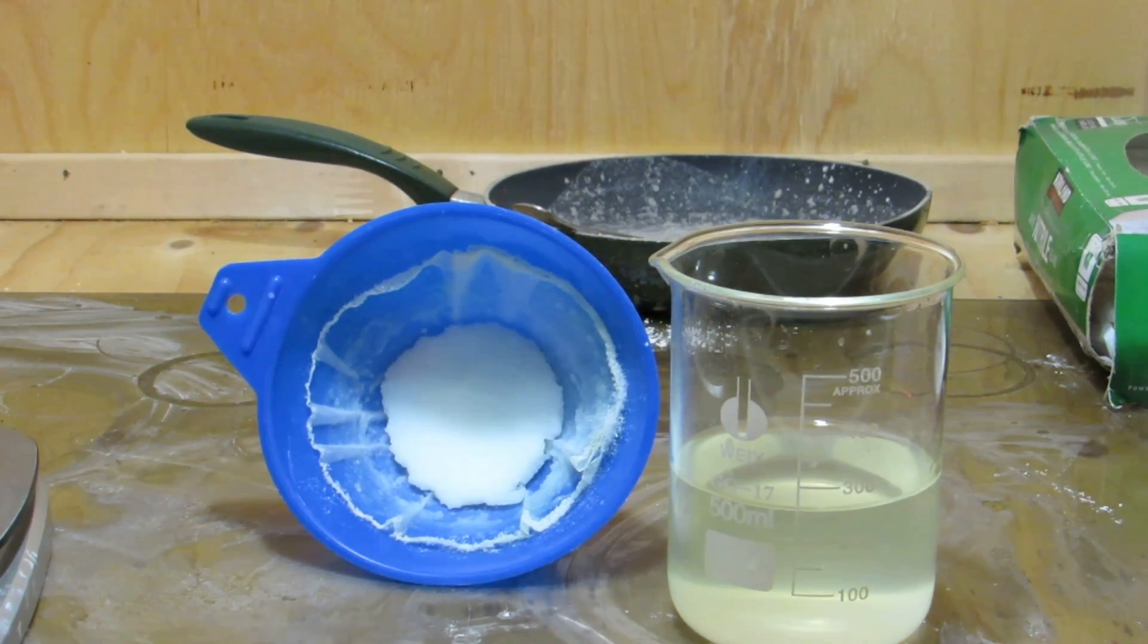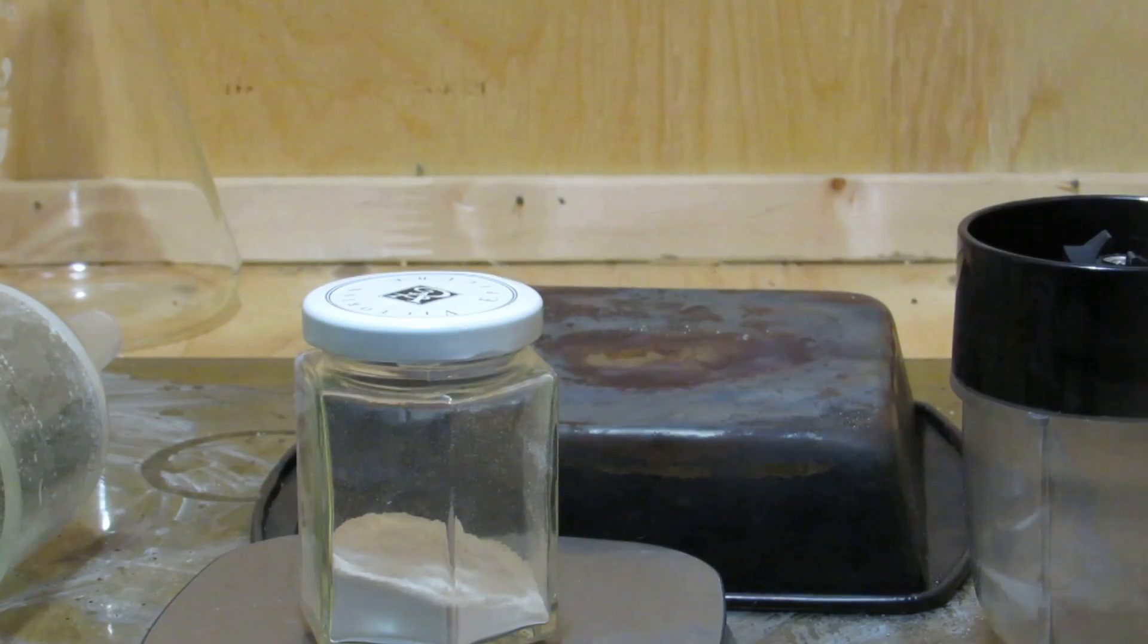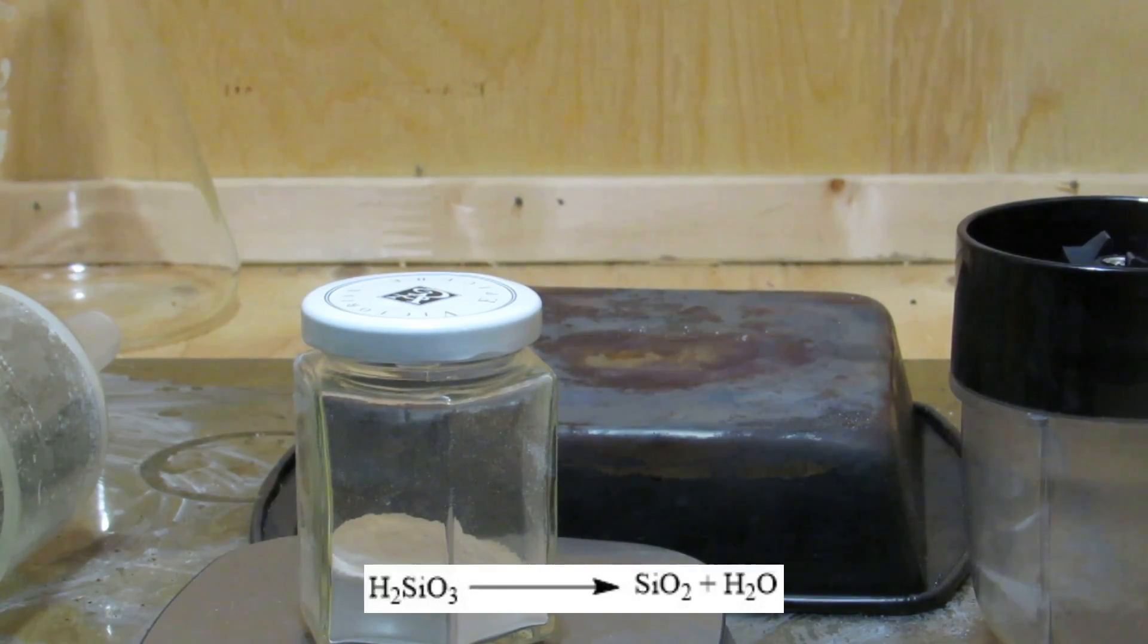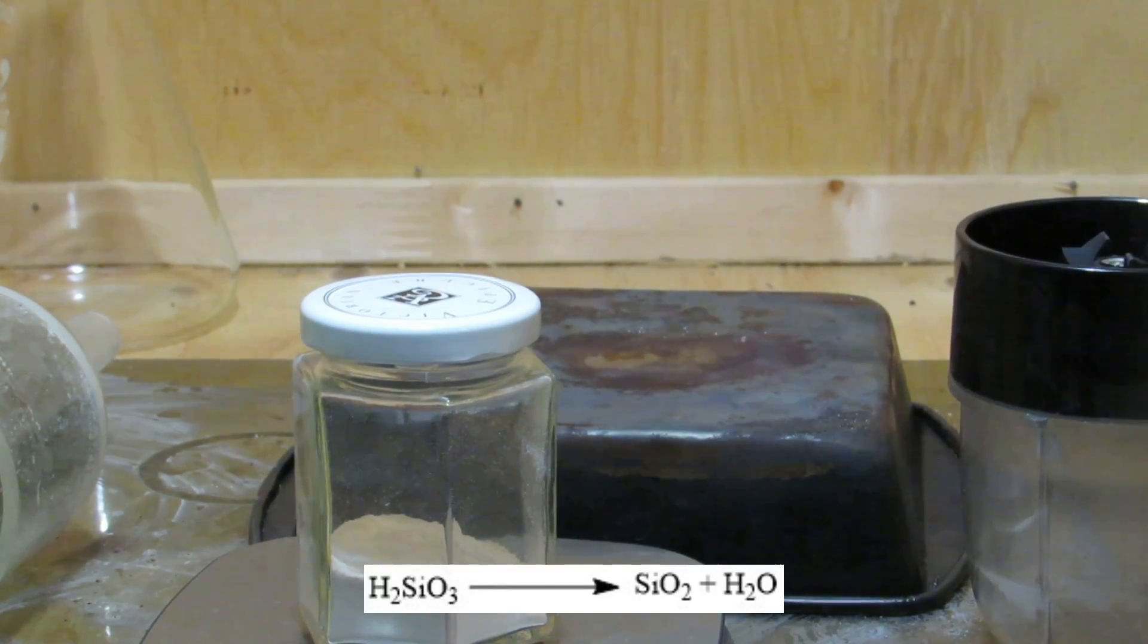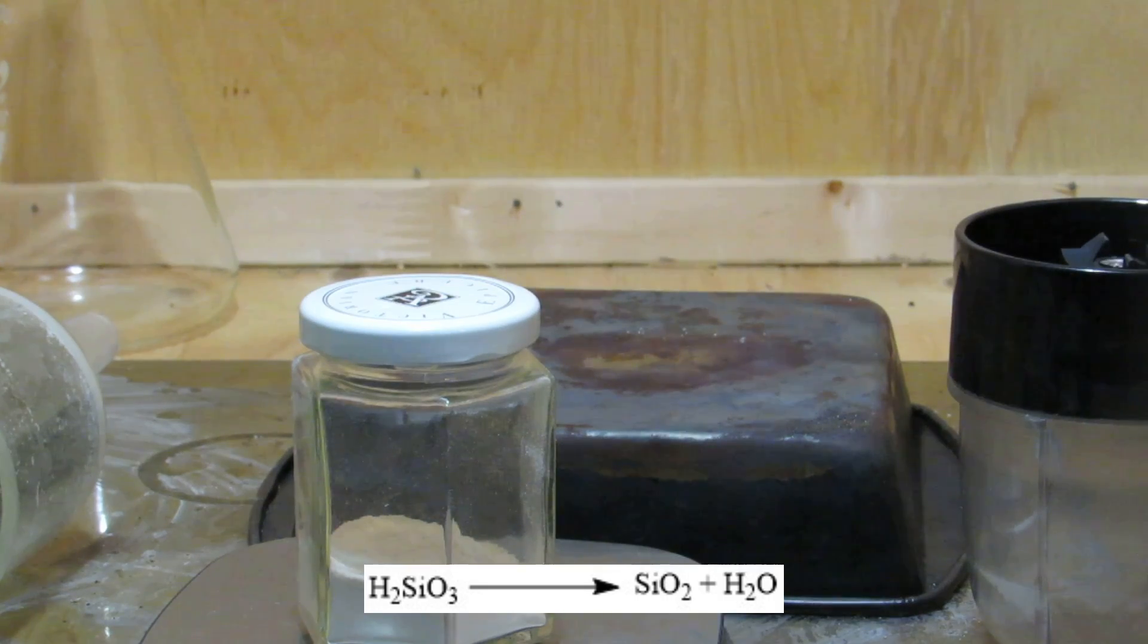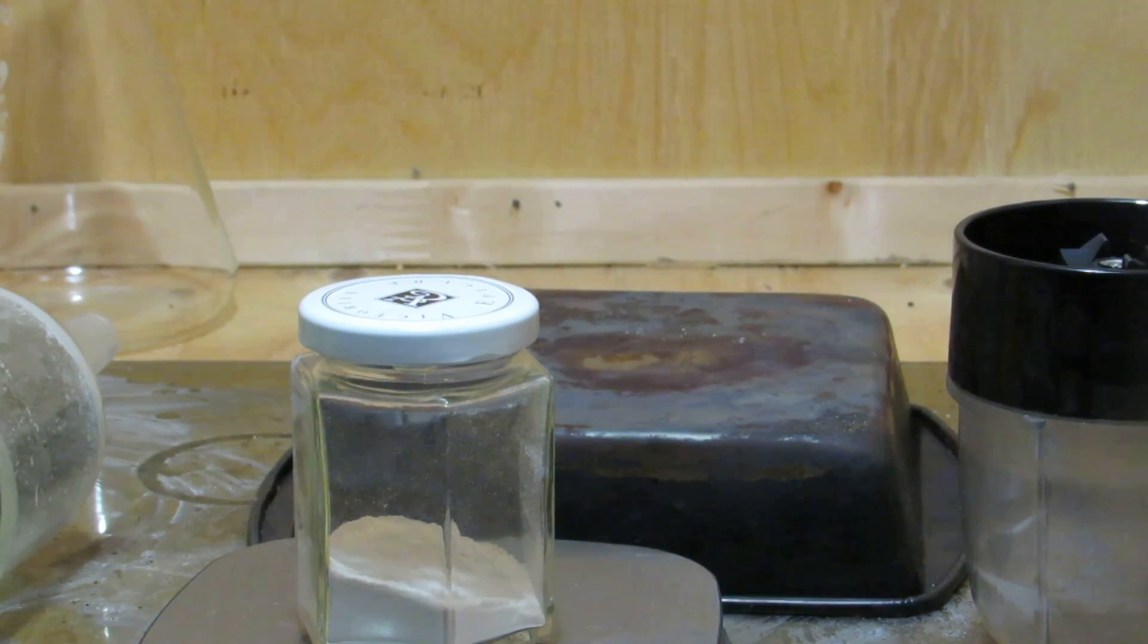After filtering, the silicic acid was heated in an oven to 400 degrees Fahrenheit to drive off all the water and decompose it to amorphous silicon dioxide gel. In total, 13 grams of pure silicon dioxide gel was obtained.